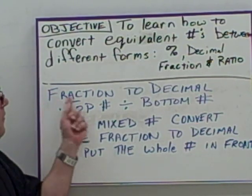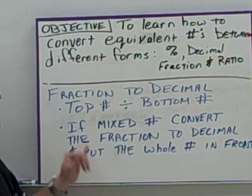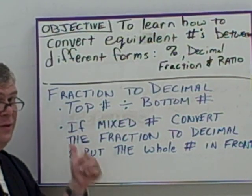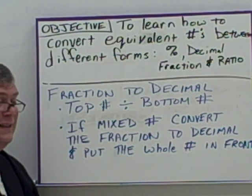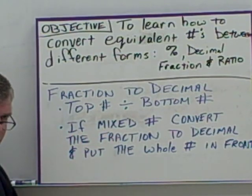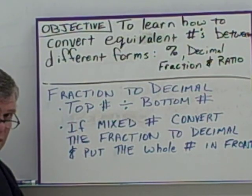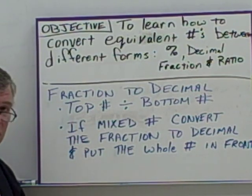We're going to look at fraction to decimal first. To convert a fraction to a decimal, you need to take the top number and divide it by the bottom number. The top number is the numerator; the bottom number is the denominator. If you have a mixed number, you're going to convert just the fraction part to a decimal, and then tack the whole number onto the front of that decimal.